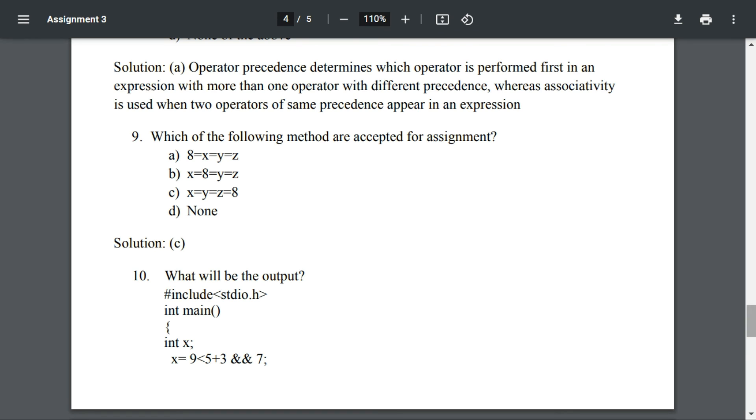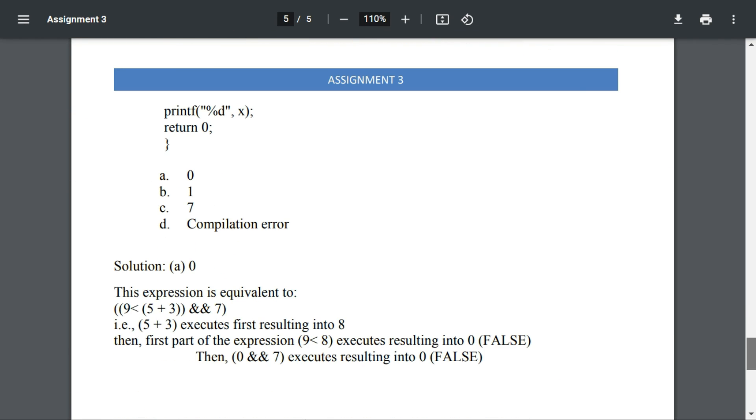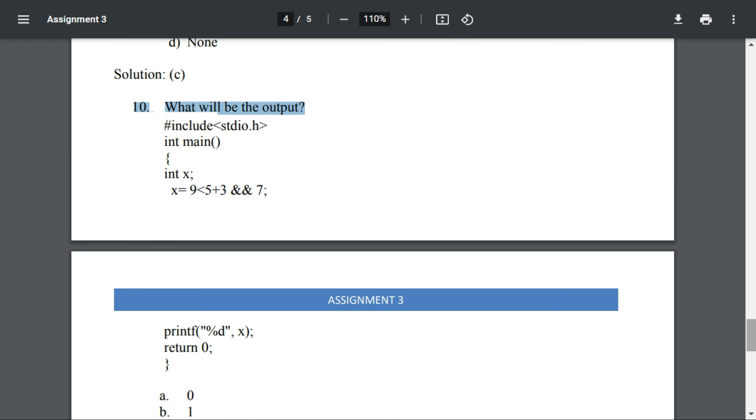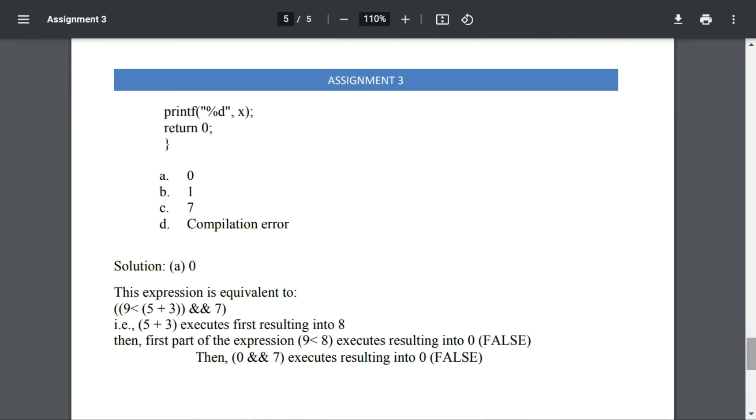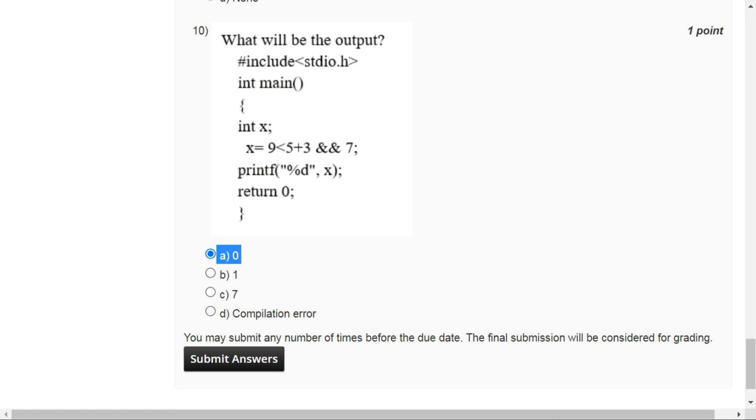For question number 10, the correct option is option A: zero, because if any of the operands of the AND operator is false, the result of the AND operation will be zero.